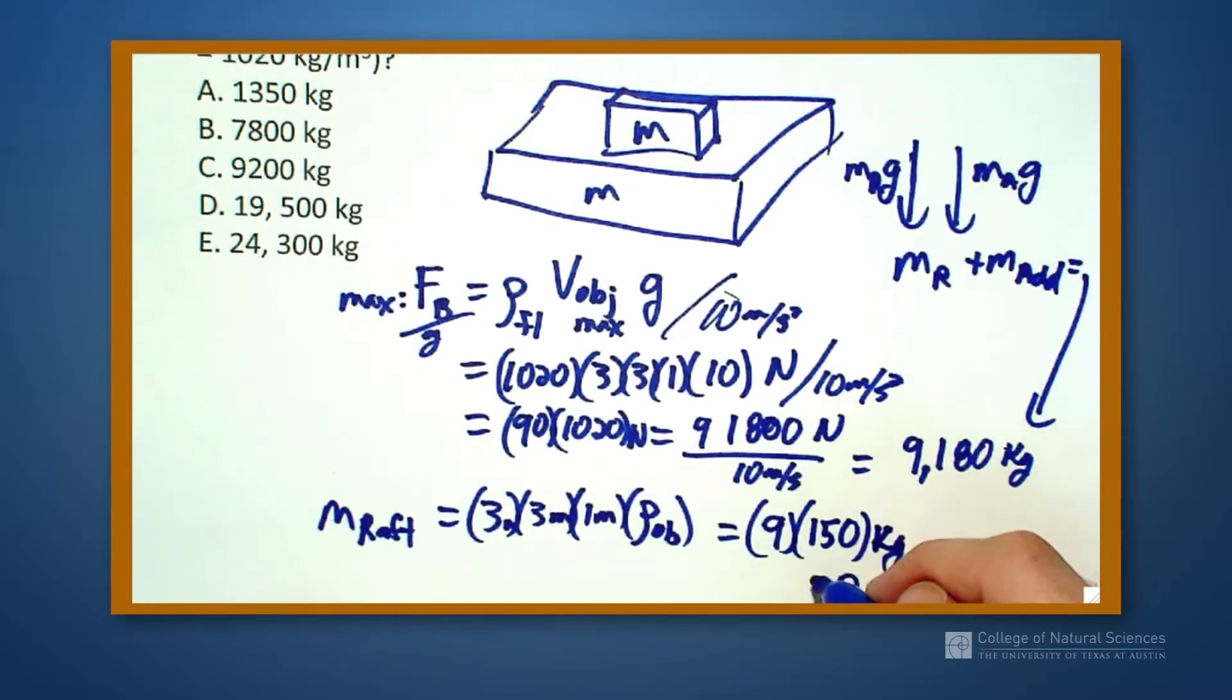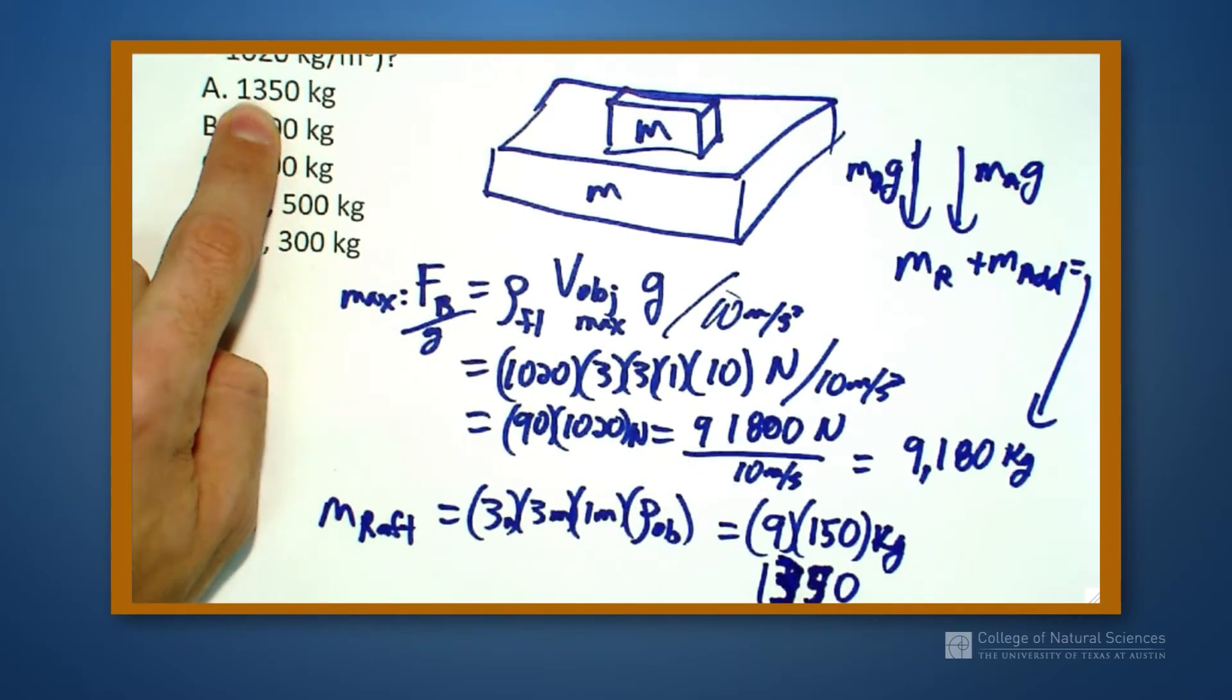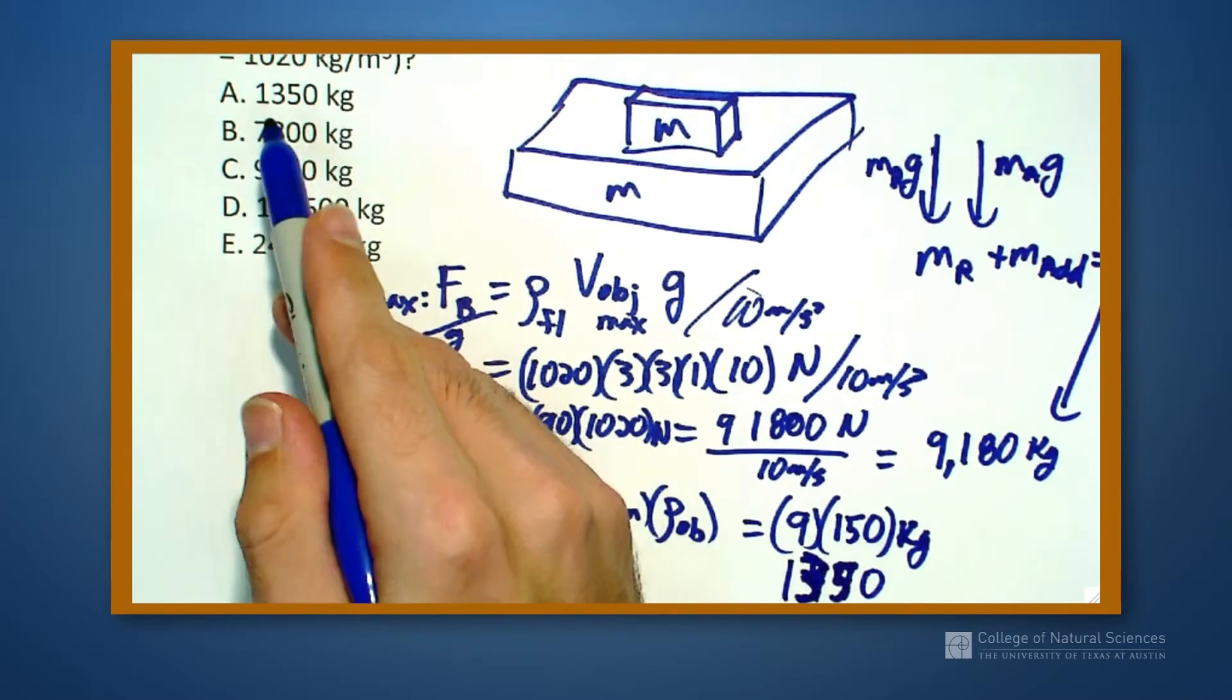So 9 times 150 is going to be, 9 times 5 is going to be 45, and 9 times 100 is 900, so this is 1,350, which actually is one of my answers. So the mass of the raft is 1,350.